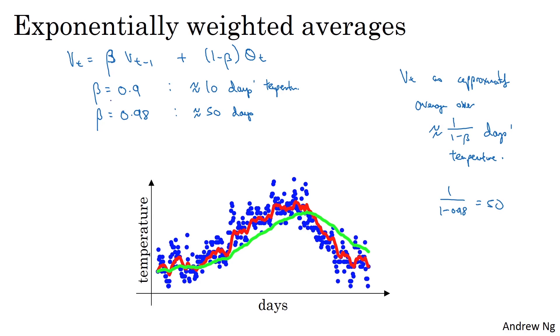And the reason for that is when beta is equal to 0.98, it's giving a lot of weight to the previous value and a much smaller weight, just 0.02 to whatever you're seeing right now. So when the temperature changes, when temperature goes up or down, this exponentially weighted average just adapts more slowly when beta is so large.